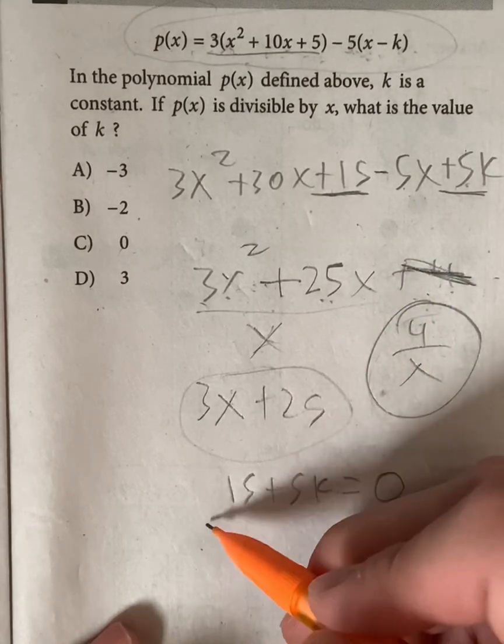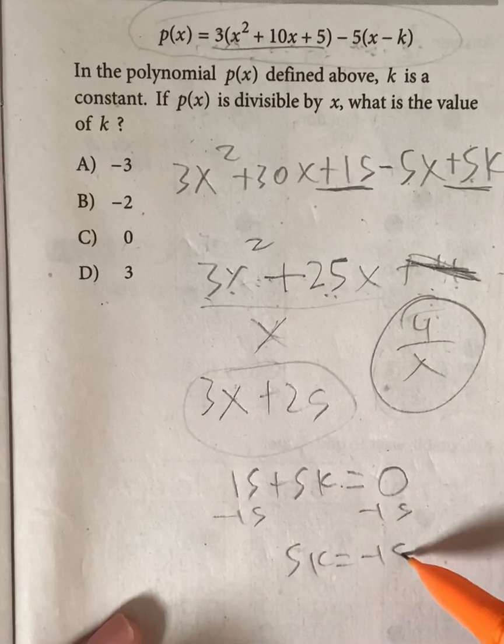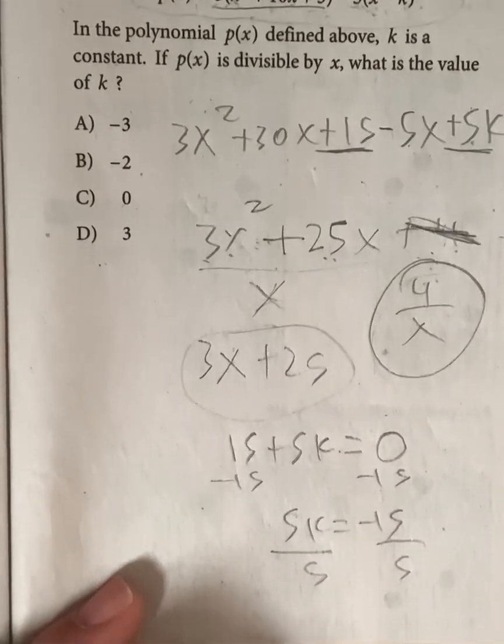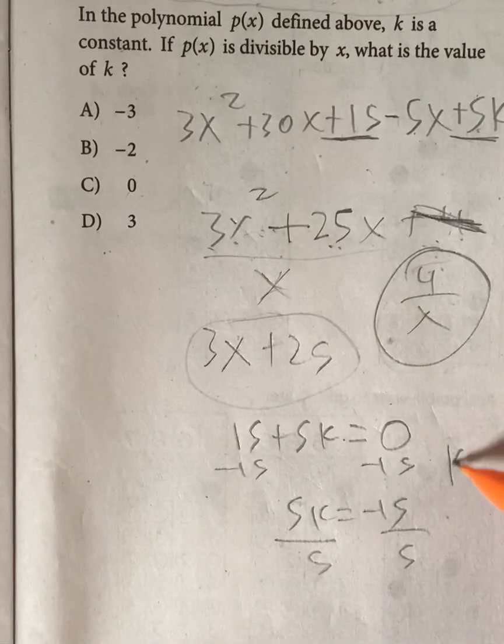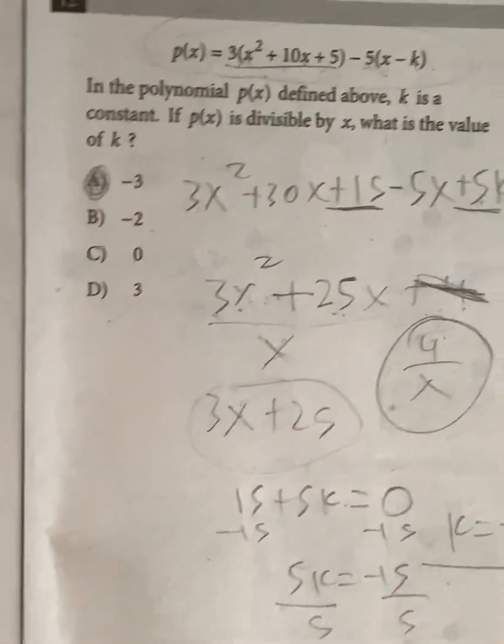So doing so, we can just subtract 15 on both sides, giving us 5k is equal to negative 15. Divide both sides by 5. That should give us k is equal to negative 3. Meaning your answer has to be a for the value of k.